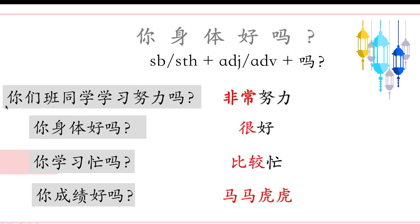Continue. 你们班同学学习 — subject. 你身体 — subject. 你学习 — subject. 你成绩 — subject. Where is the predicate? Adjectives and adverbs serve as predicate. 努力 — predicate. 好 — predicate. 忙 — predicate. 好 — predicate.